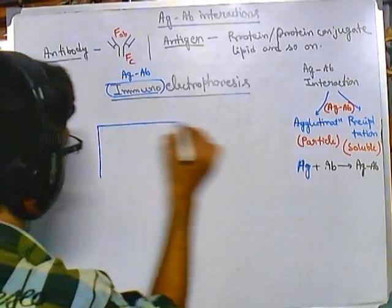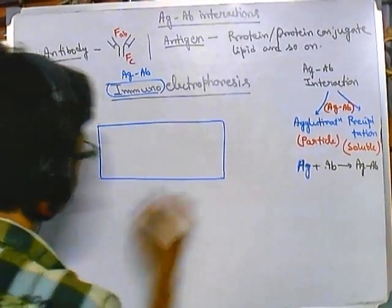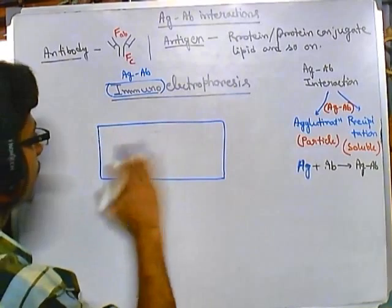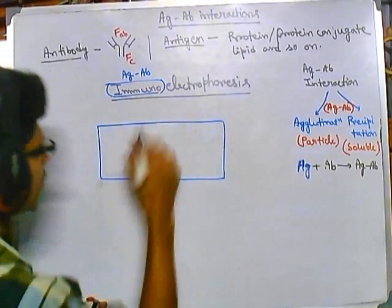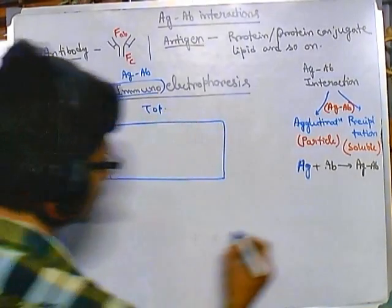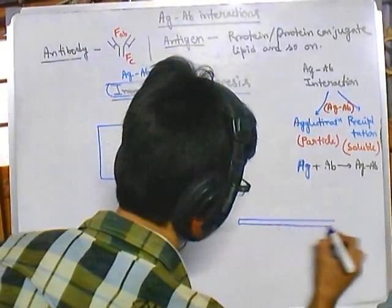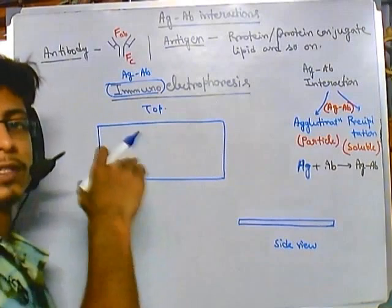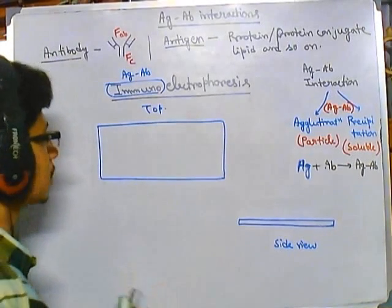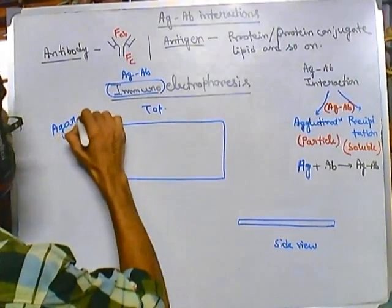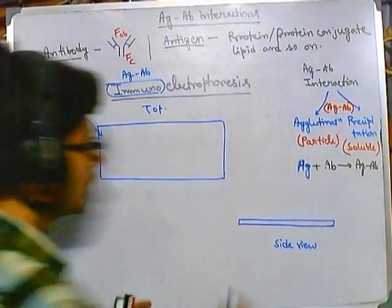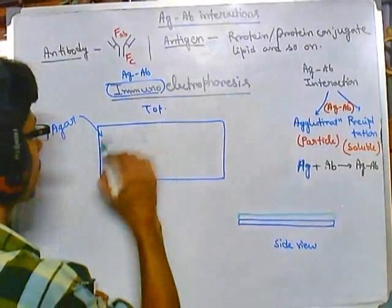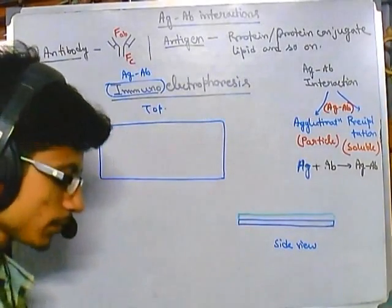If we look at a slide, this is the top view. The side view looks simply like this. We need a solid matrix because the slide is made of glass. The solid matrix is provided by putting agar solution onto it, since agar is a solidifying agent. We put the agar solution throughout the slide.